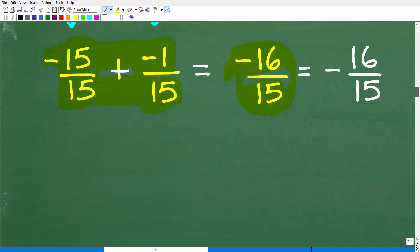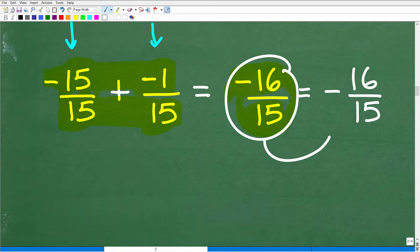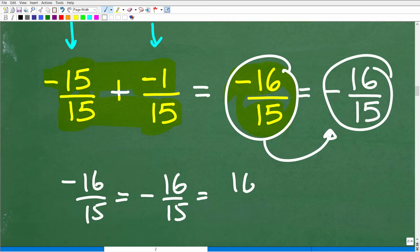Now here, this tends to confuse students. This is the answer. These answers are equivalent. So if you were ever wondering if negative 16 over 15, is that the same as negative 16 over 15, or is that the same as 16 over negative 15? All of these are equivalent. So if you end up with a negative number in the numerator or a negative number in the denominator, your final answer, put that negative number here because a negative divided by positive or positive divided by negative, that whole thing is negative. But if you wrote this or this, your teacher should not deduct any points because they know what's going on. But you yourself need to know that these are all equivalent answers.